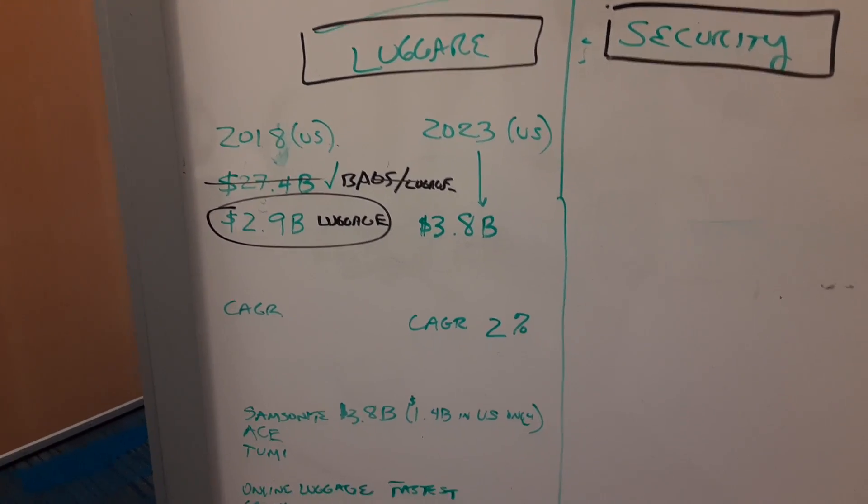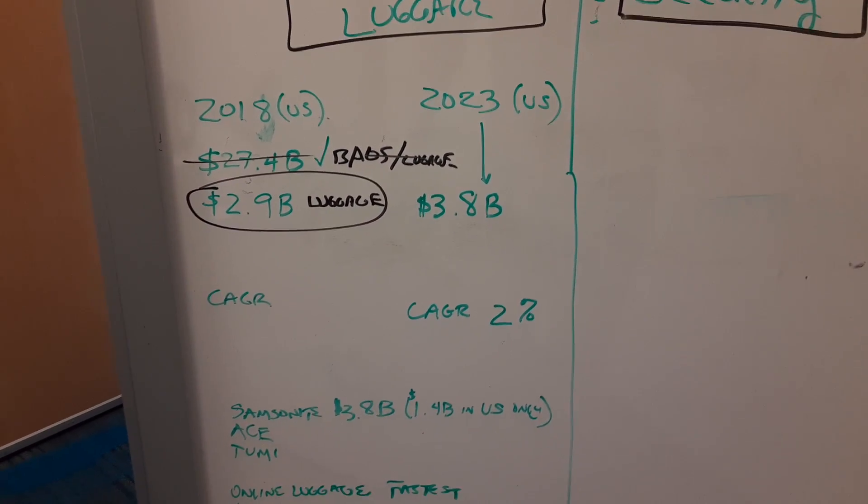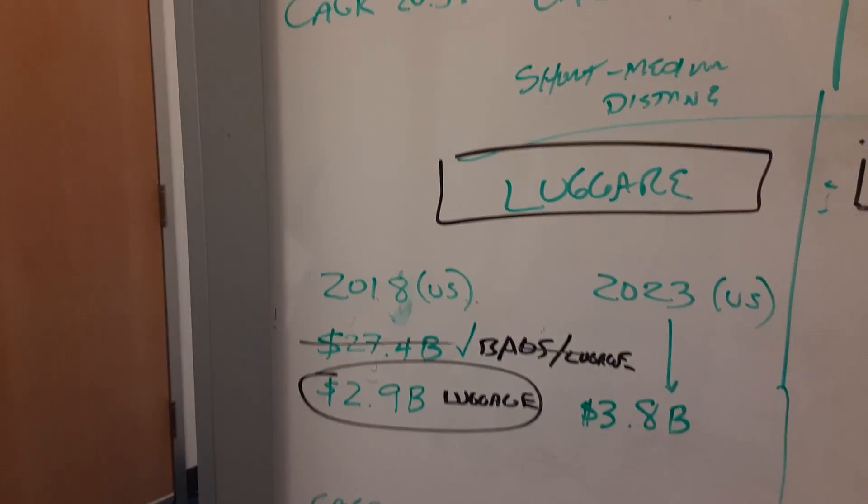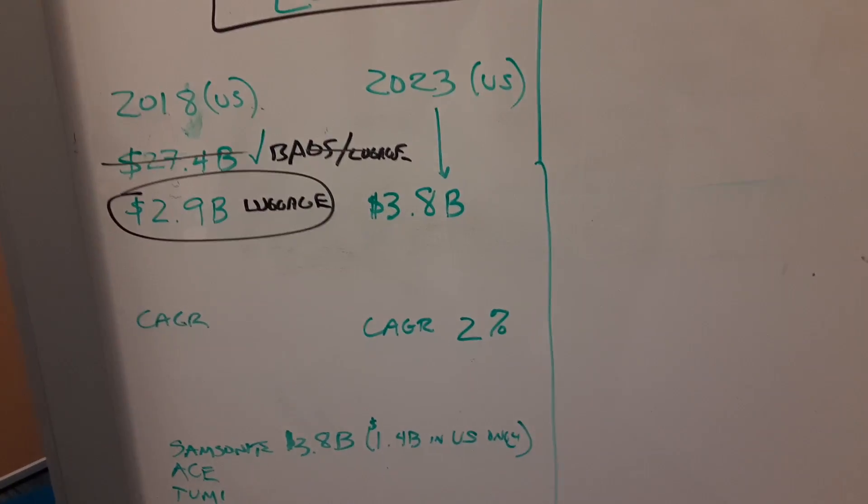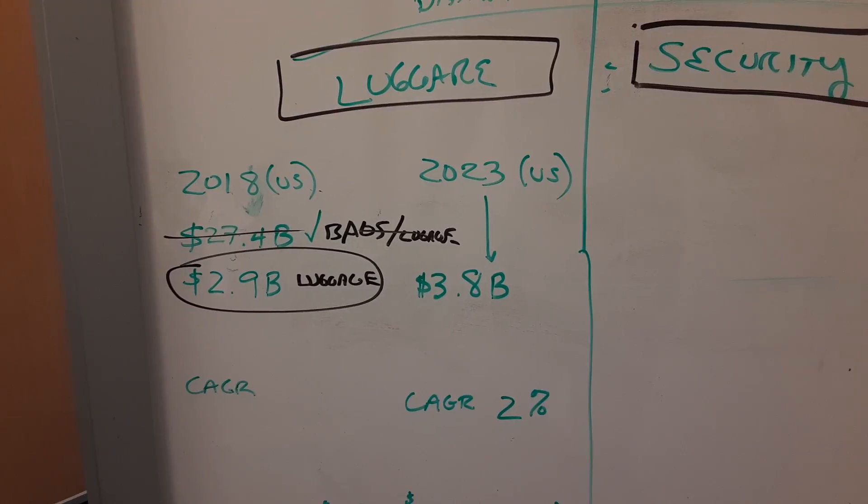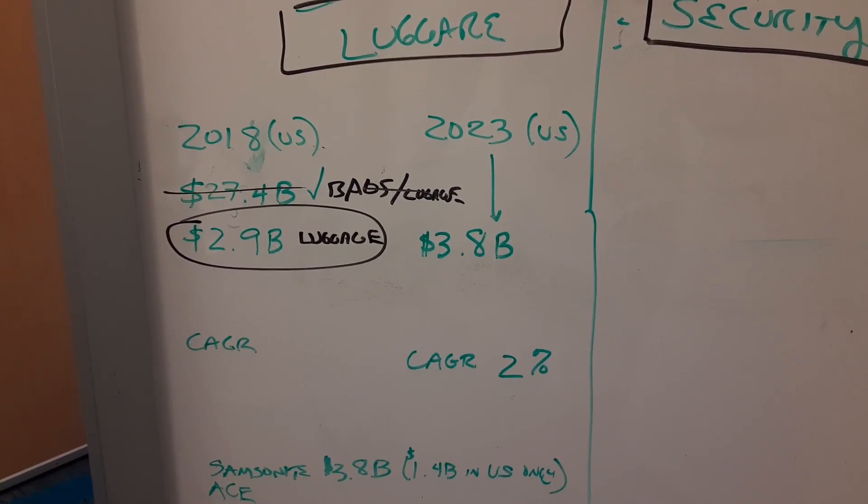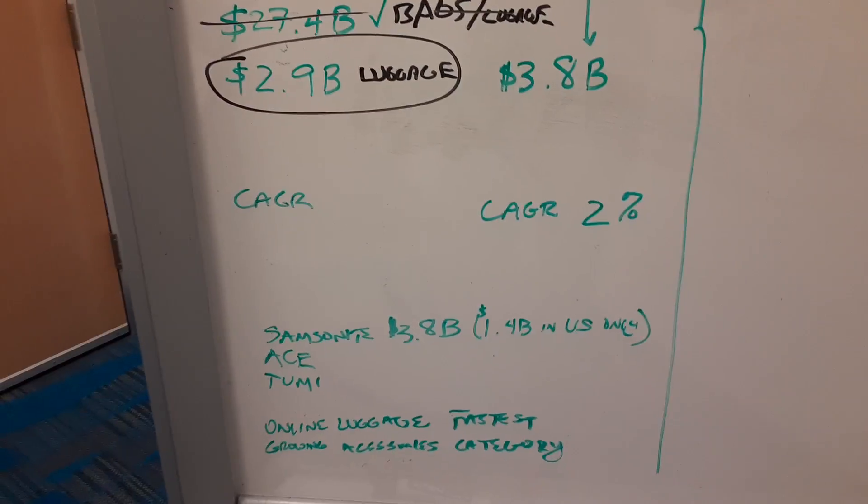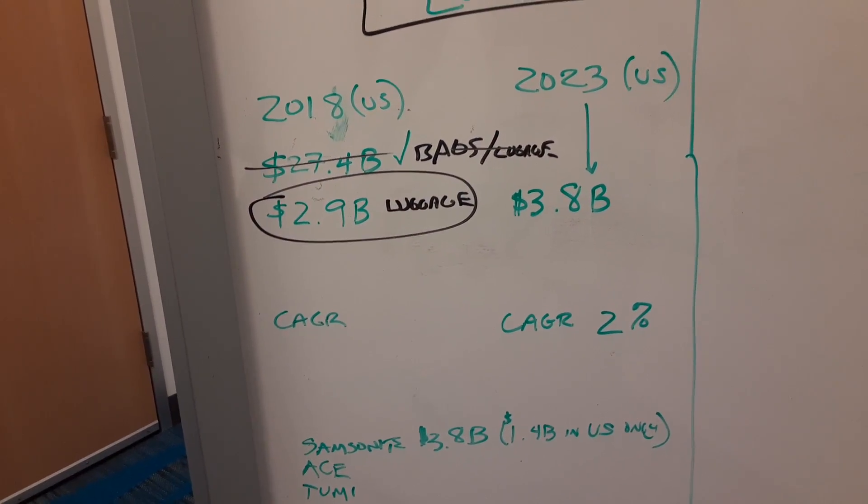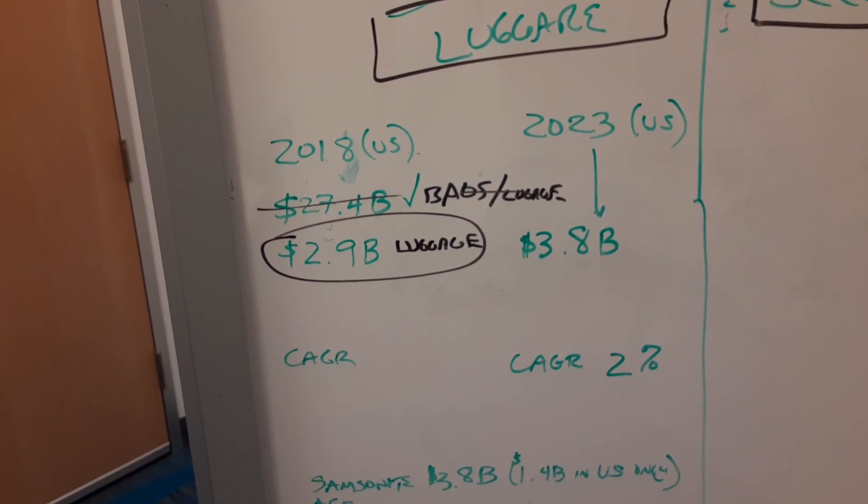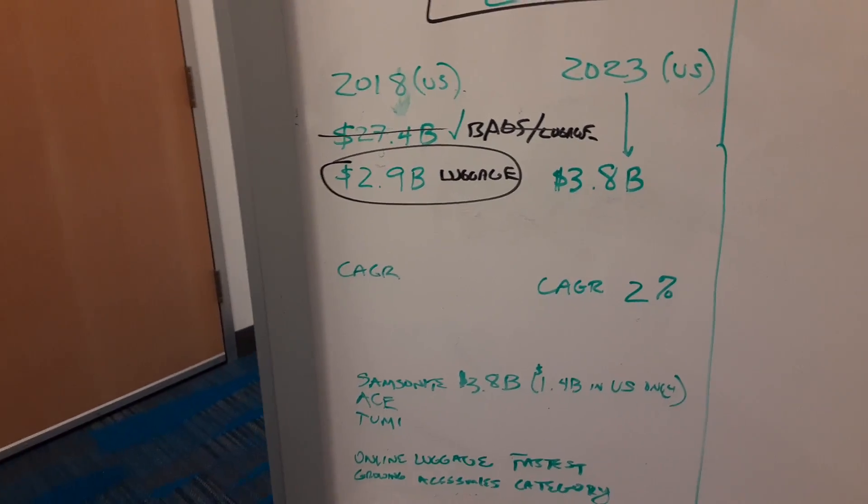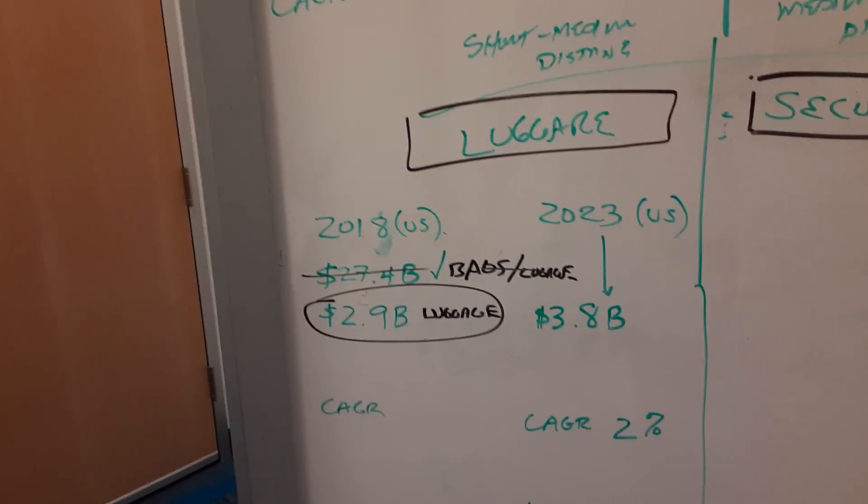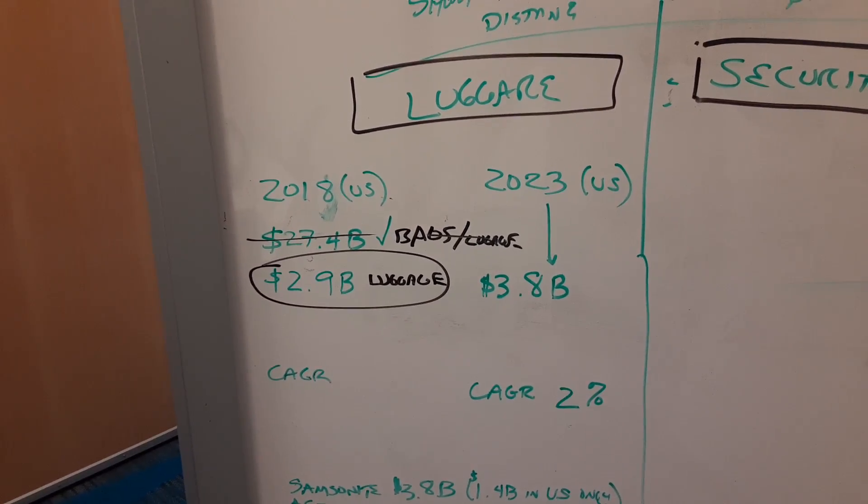Samsonite is 3.8 billion dollars globally, 1.4 billion in the US. Out of the 2.9 billion in 2018, Samsonite made just shy of half that money. They own a lot of companies people don't know about - they're parent companies of each other. Tumi, for example, is owned by Samsonite. You have to add them all up to truly get a good idea of how much Samsonite's dominating the luggage side.